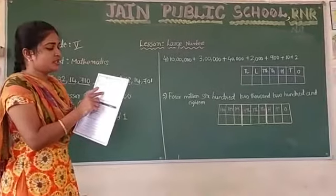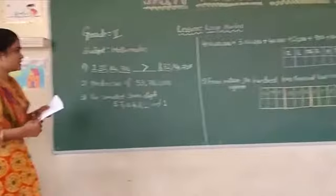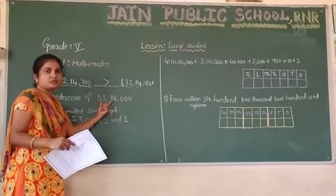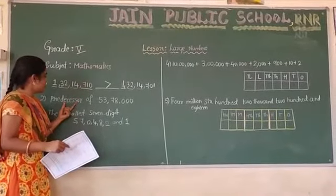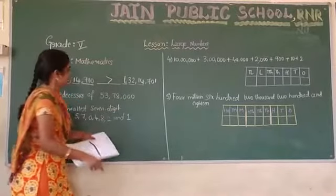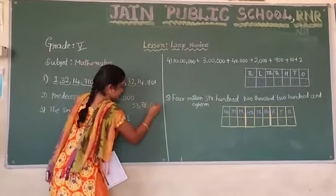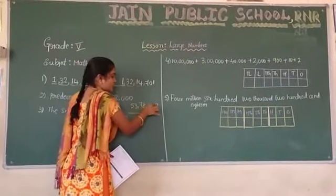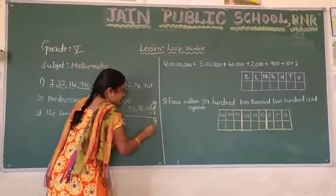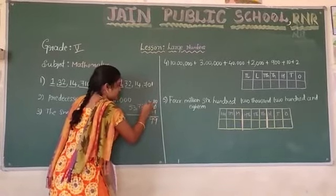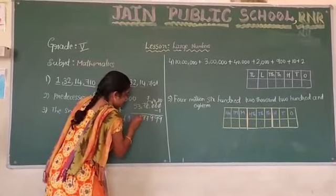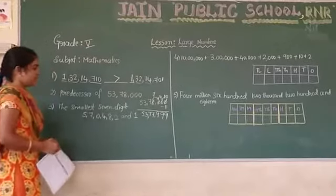The predecessor of 53,78,000. Predecessor means the number that comes before, so we subtract 1. 53,78,000 minus 1 — since 0 minus 1 is not possible, we borrow. 10 minus 1 is 9, carry over, and continue borrowing. The hundreds place gives 9, tens gives 9, and 7 becomes 7. So the answer is 53,77,999.